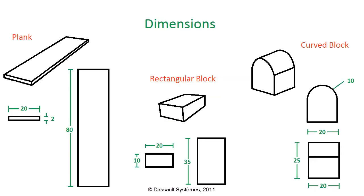The dimensions of the parts are displayed in the figure. The plank is made of aluminum 2024-T3, with a mass density of 2770 kg/m³, a Young's modulus of 73.1 GPa, and a Poisson's ratio of 0.33. The rectangular and curved blocks are made of AISI-1005 steel, with a mass density of 7872 kg/m³, a Young's modulus of 200 GPa, and a Poisson's ratio of 0.29.